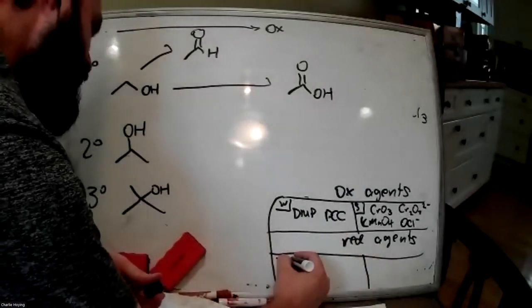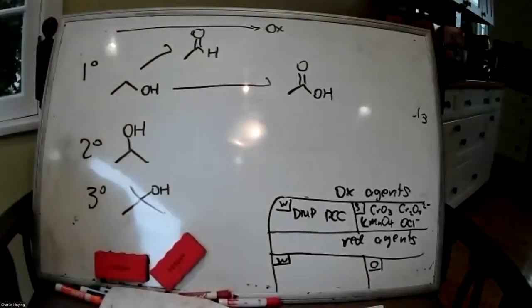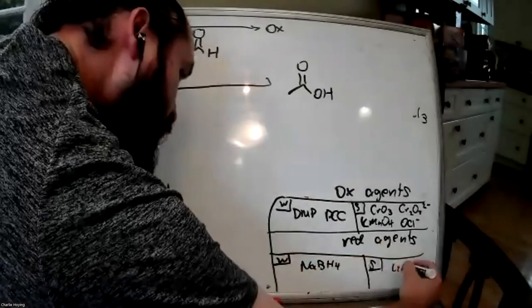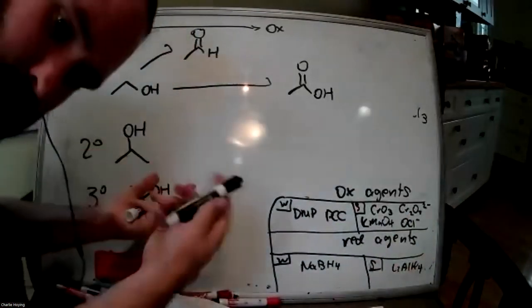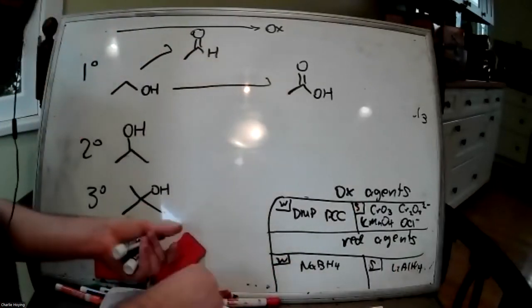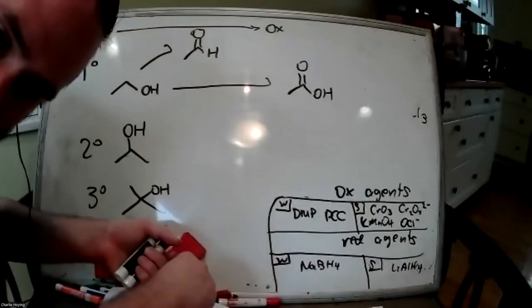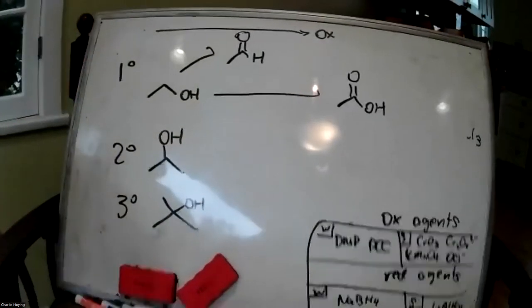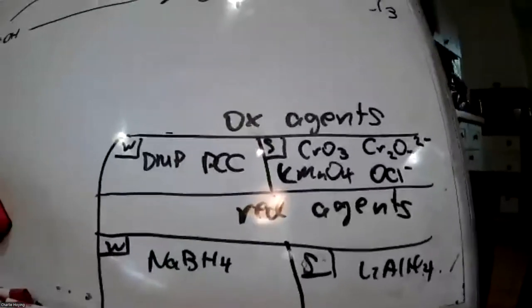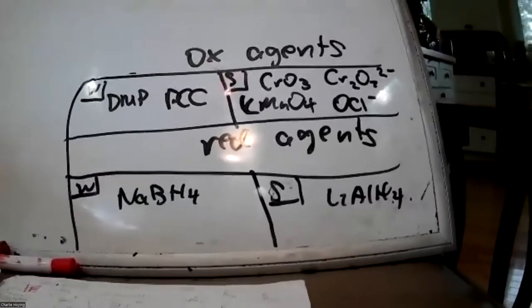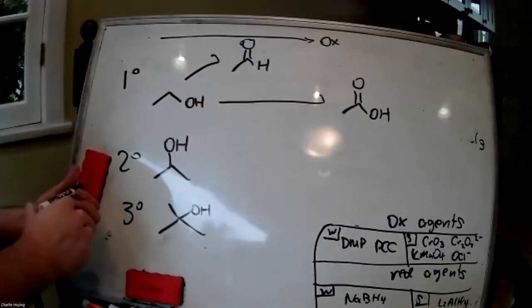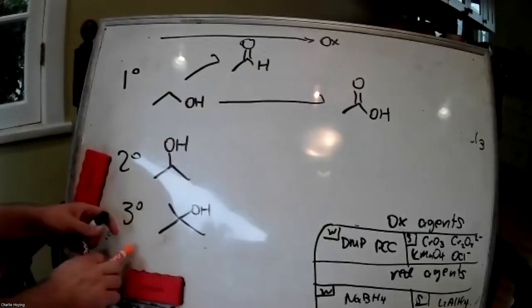For reducing agents, we have weak and strong reducing agents as well — as already discussed, sodium borohydride and lithium aluminum hydride. In a biological context, NADH, NADPH, and FADH2 are reducing agents. For our oxidation of primary alcohol to aldehyde, we'll use warm colors for oxidation and cool colors for reduction. If we weakly oxidize the primary alcohol, we get an aldehyde. If we strongly oxidize the primary alcohol, we get a carboxylic acid. We can also strongly oxidize the aldehyde to a carboxylic acid.